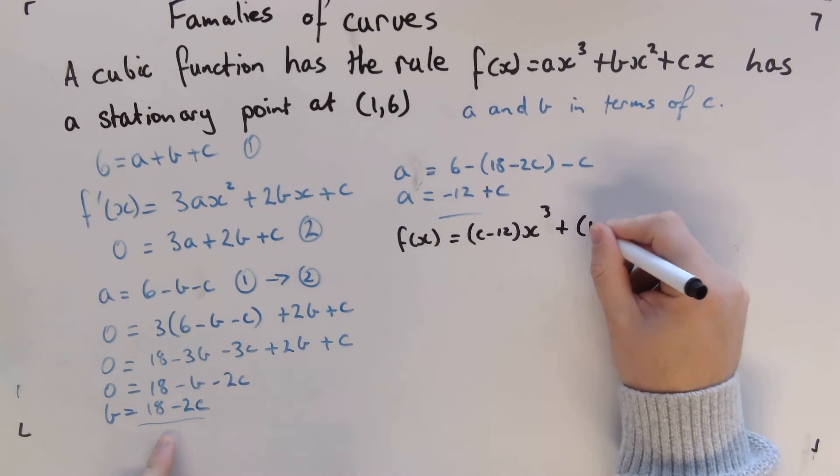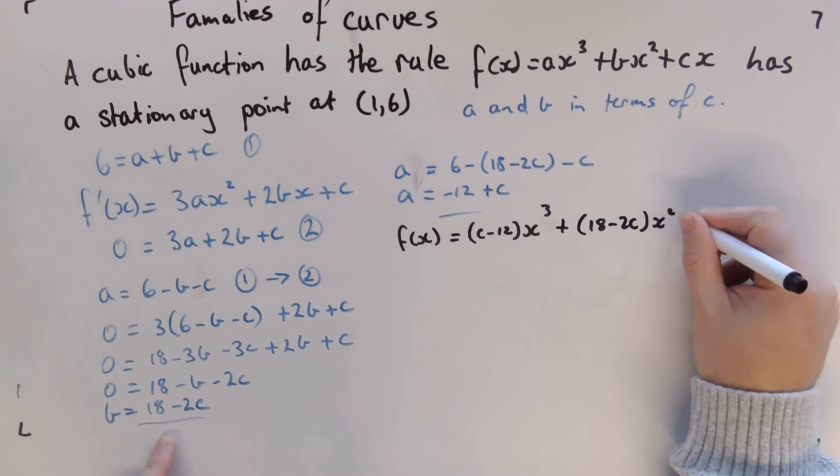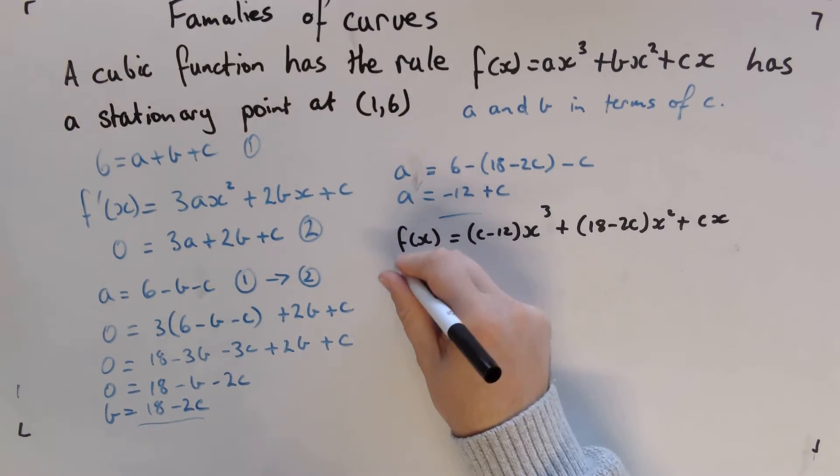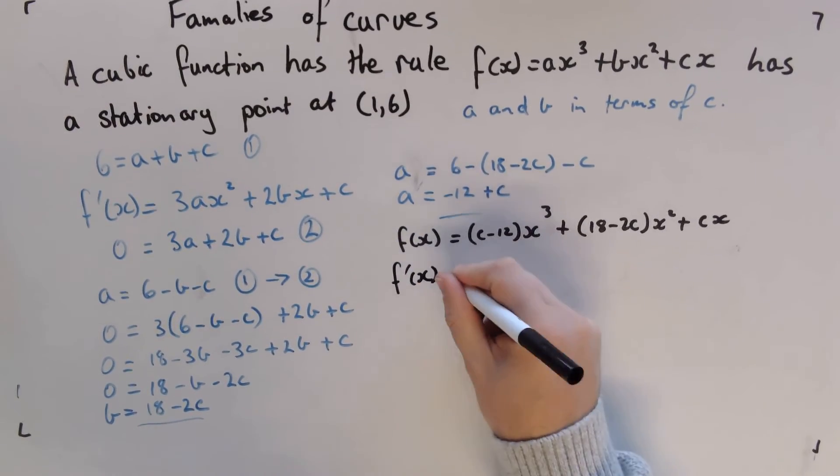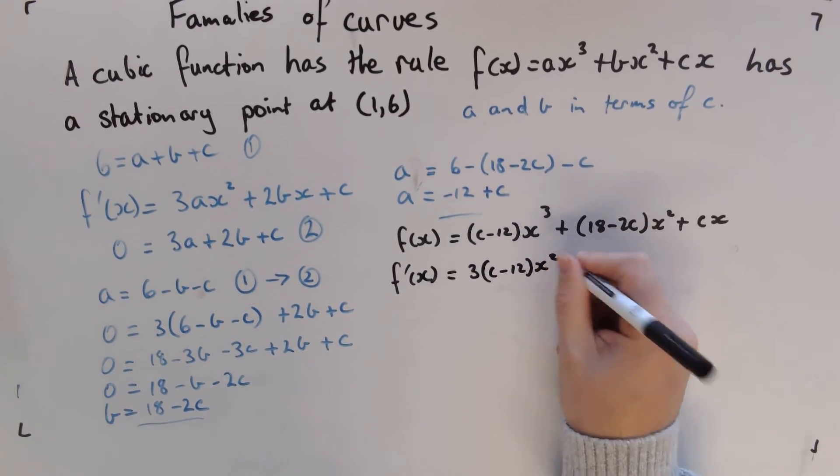So we've got everything in terms of c now. So what you're going to do is find our derivative. So it's f'(x) = 3(c - 12)x²